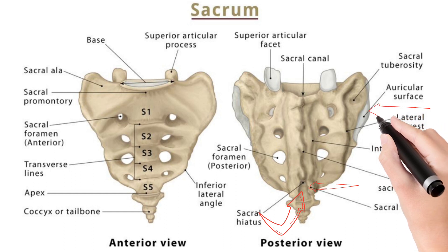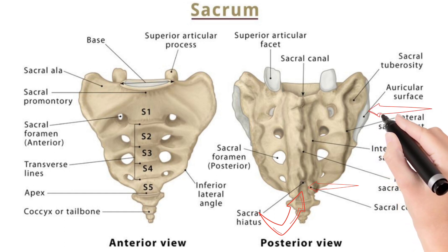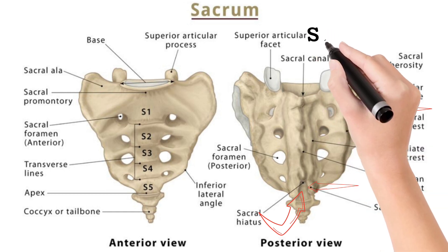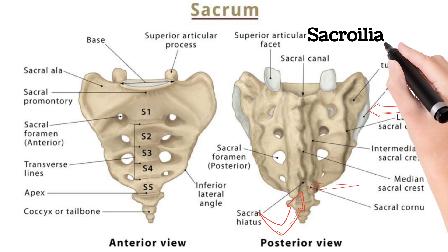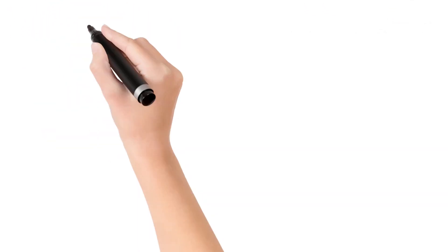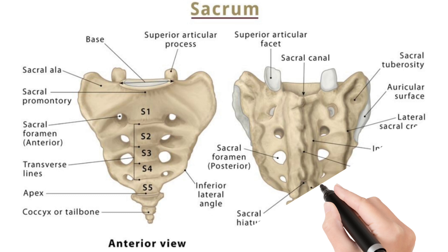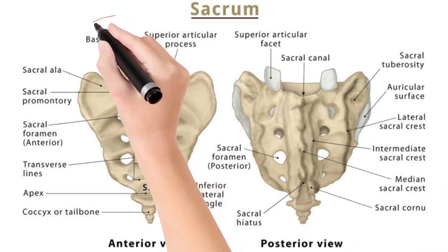We actually inject the drug into this sacral hiatus. There is an articular surface for the iliac bone, and the sacrum makes a joint with the iliac bone that is known as the sacroiliac joint.